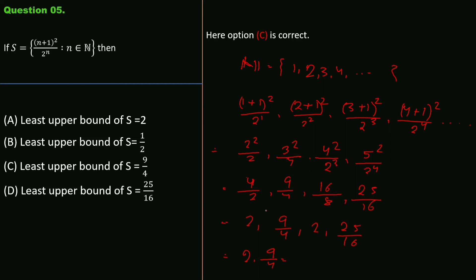Comparing values: 9/4 = 2.25, then 2, and 25/16 = 1.5625. The largest value is 2.25 = 9/4, and all remaining values are smaller than this. Therefore the least upper bound of S is 9/4, and option C is correct.